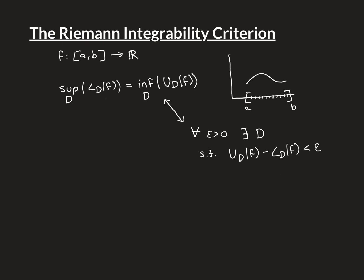Let's now move on and prove the opposite direction. We're going to assume that the Riemann integrability criterion is met for our function f, and we're going to show that implies the function is Riemann integrable over our interval a, b. This is slightly more difficult than proving the forward direction we've already done, but not that much. We will need a pretty simple result in order to do this, which we'll look at before going on to the major bulk of the proof.